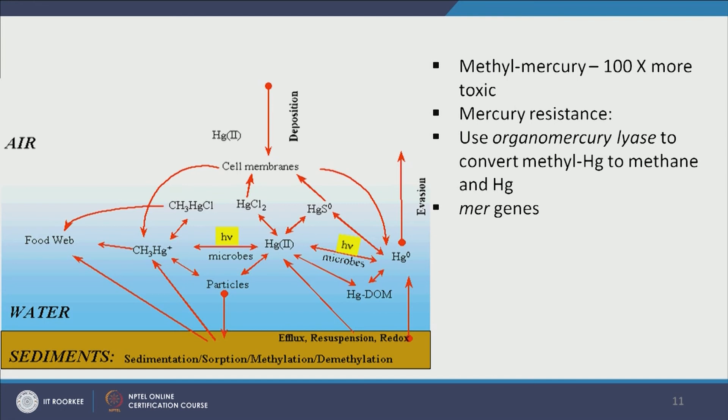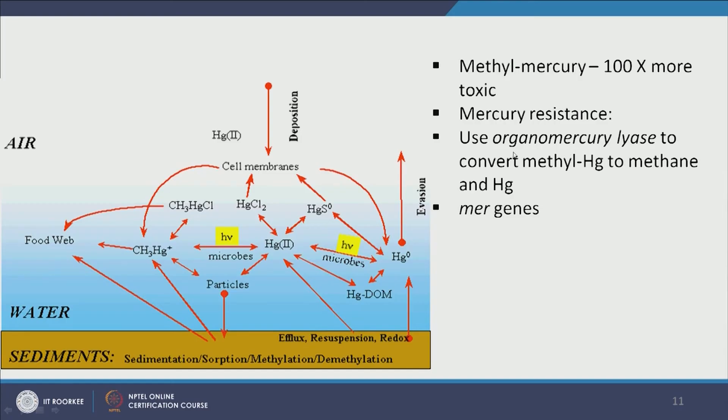Interestingly, some microbes are resistant to mercury. During doctoral research the author observed that mercury chloride — used as a poison to create abiotic controls — failed to kill certain bacteria. There are also microbes resistant to methylmercury. They achieve this using the enzyme organomercury lyase, which converts methylmercury into methane and mercury. These enzymes are encoded by mer genes. If you want to find mercury or methylmercury resistance in microbes, look for mer genes; there are different classes of mer genes.